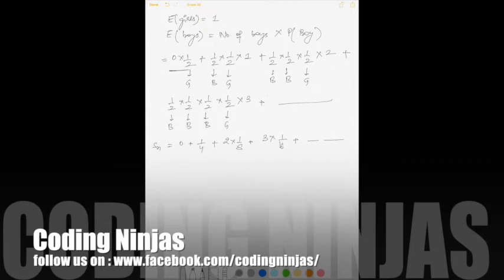So in order to simplify this, let's try something like this. Sn by 2 would be, this term would be cancelled. So 1 by 4 becomes 1 by 8, this 2 into 1 by 8 becomes 2 into 1 by 16, 3 into 1 by 16 becomes 3 into 1 by 32 and so on.